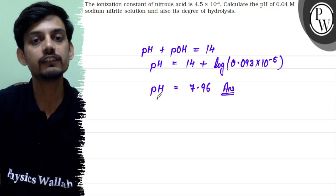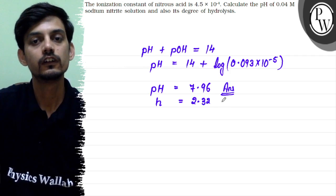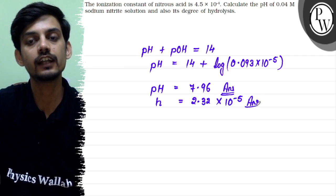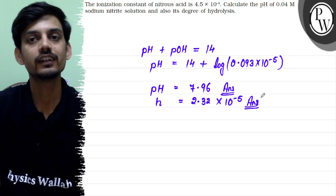And degree of hydrolysis we have already calculated, this is 2.32 × 10^-5. This will be the degree of hydrolysis of the given salt solution and answer for the given question. Hope this clears the question. Best of luck. Thank you.